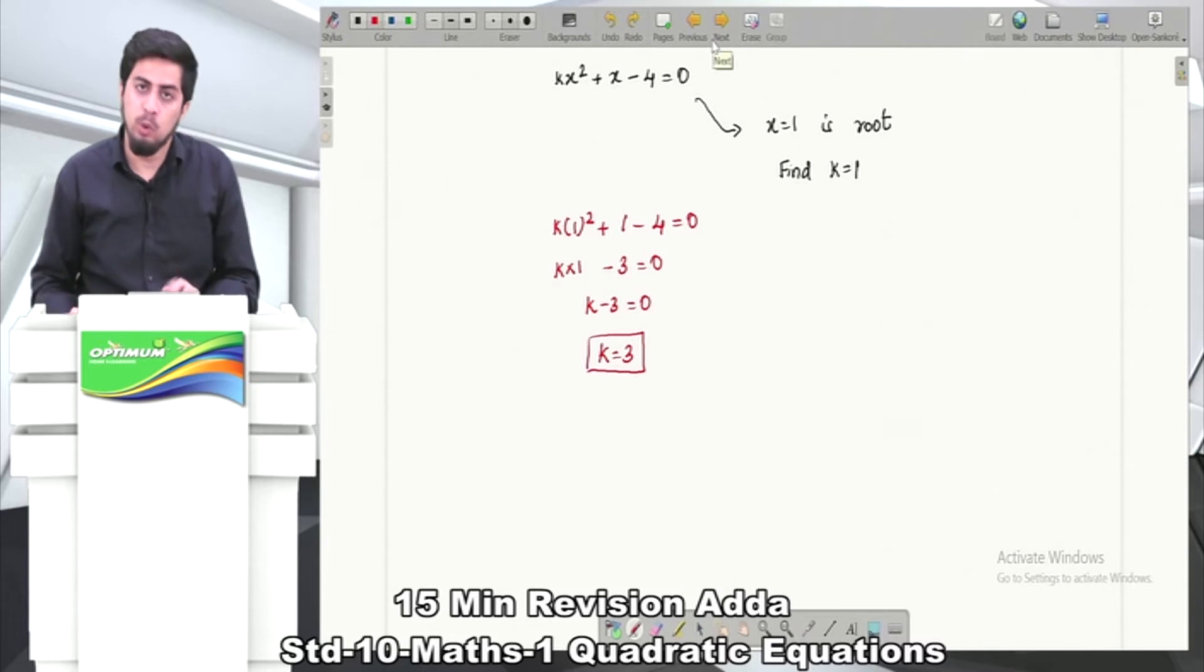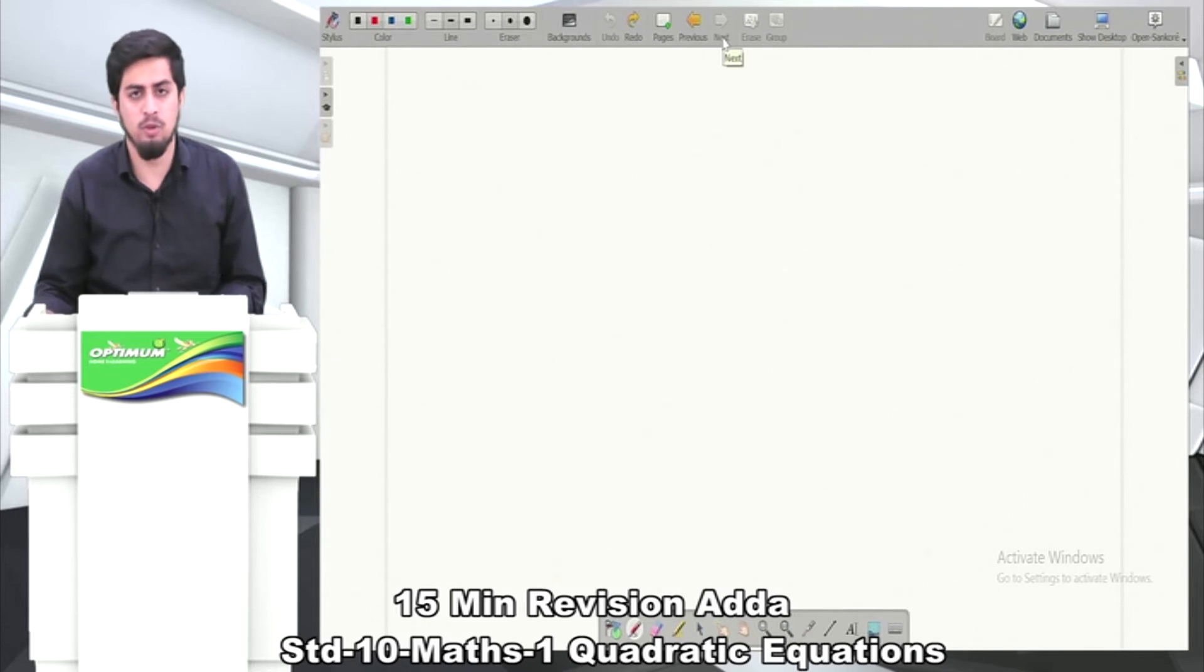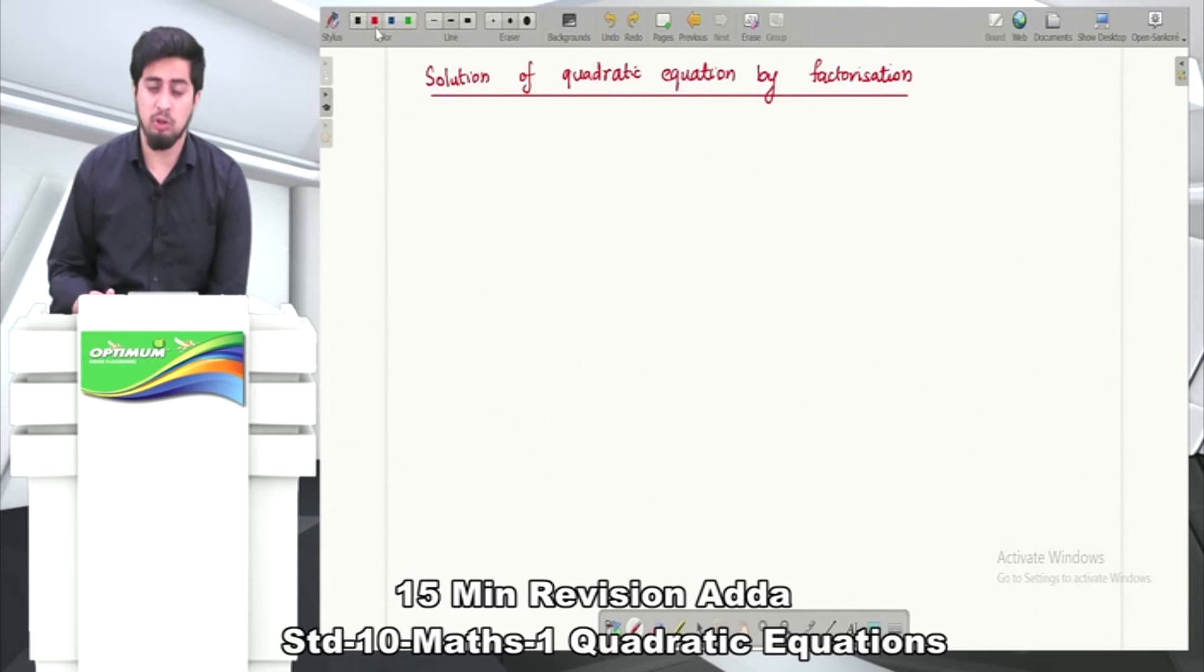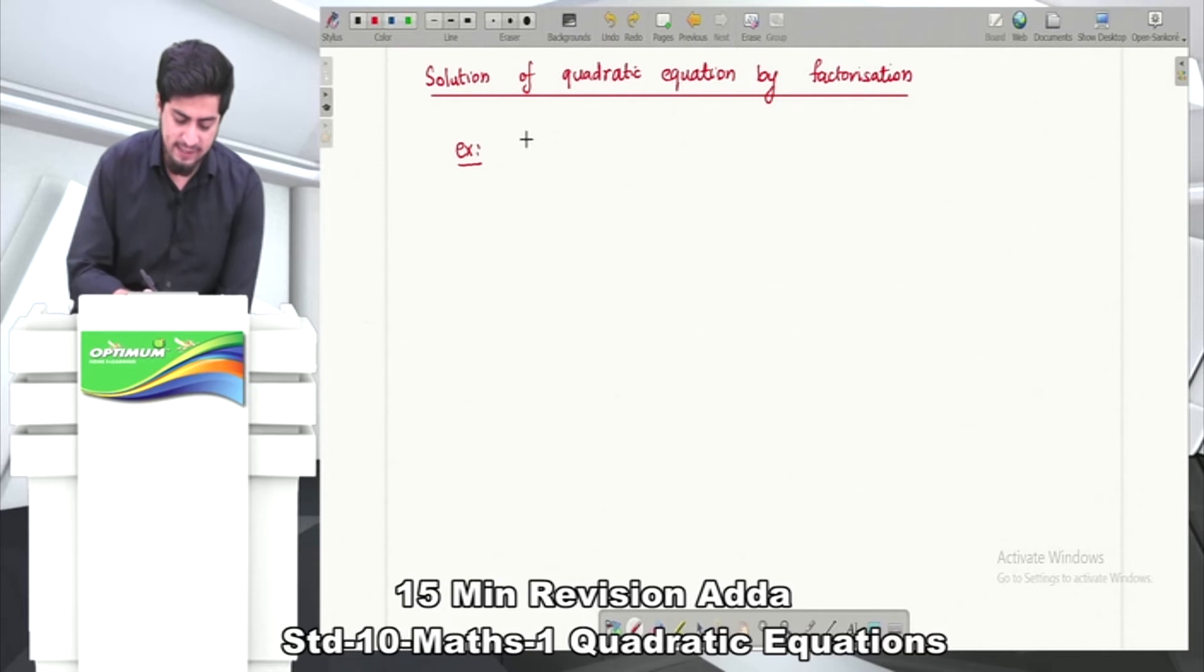Now let's revise the last and most important concept of the chapter: the method of factorization. We will do factorization and find the solution of a quadratic equation. Let's take a problem for an example, an easy example: x² + 7x + 12 = 0. We need to solve this by factorization.